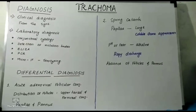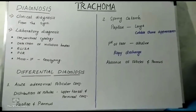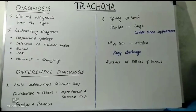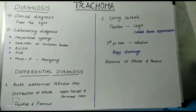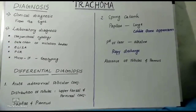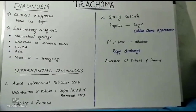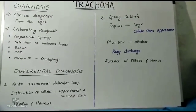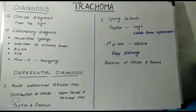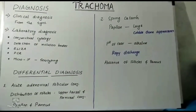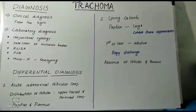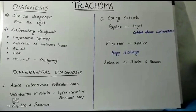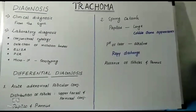Diagnosis of trachoma is clinical, based on signs. Laboratory diagnosis can be made by conjunctival cytology showing plasma cells and Leber cells. Detection of inclusion bodies in conjunctival smear by Giemsa stain or iodine stain is also suggestive. Serotyping is done by microimmunofluorescence. ELISA and PCR can also be used for diagnosis.